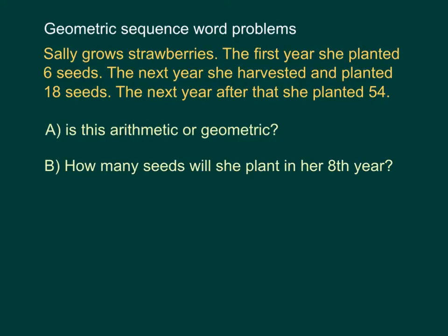There are two parts to this question. The first one asks, is this an arithmetic or a geometric sequence? Well, is there anything I can add to six to get 18? Yes, I could add 12. But if I add 12 to 18, I do not get 54. So it is not arithmetic.